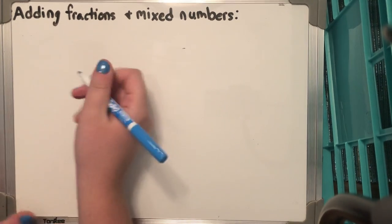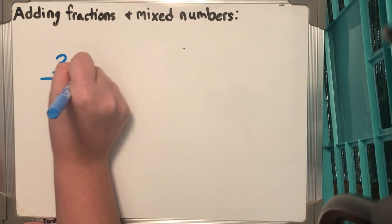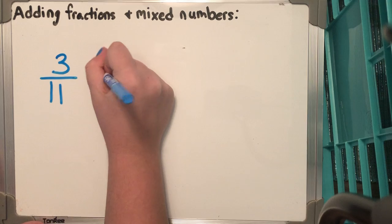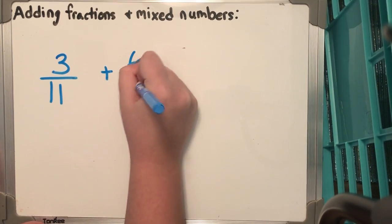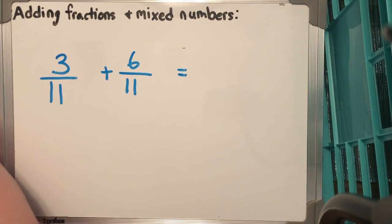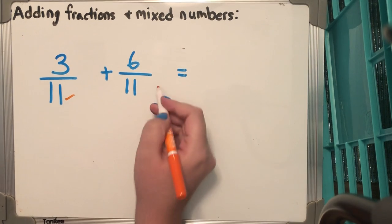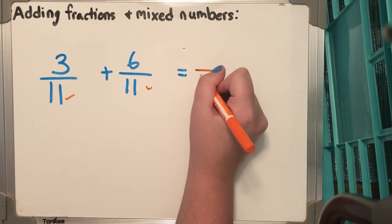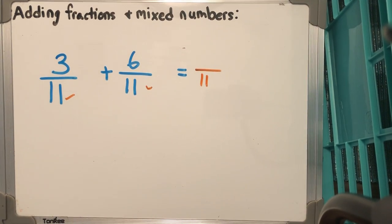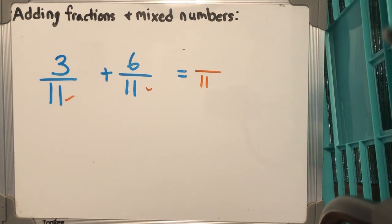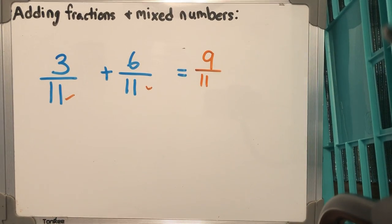So for our first problem, we have 3/11 + 6/11. Now we know that because we have the same denominator, our denominator is going to be 11. And all you have to do is add those numerators. So 3 + 6 = 9. So we get 9/11. Pretty simple, pretty straightforward.